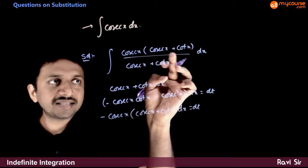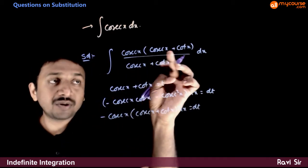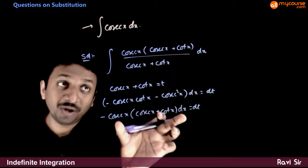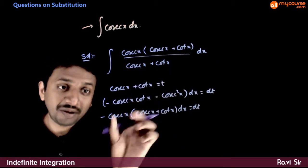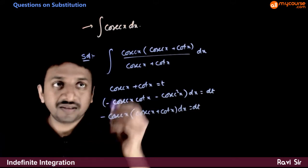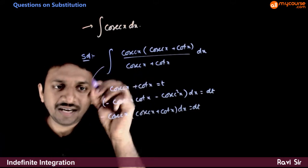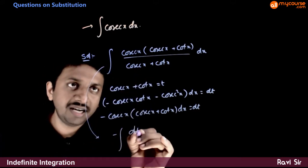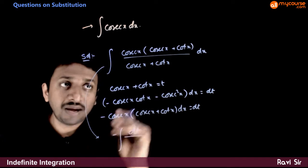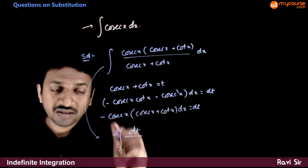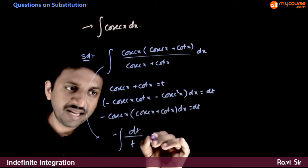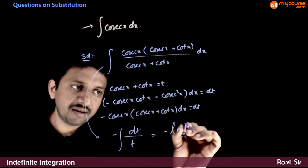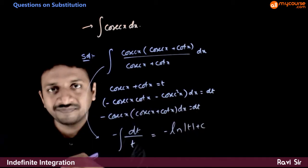So cosecant x times (cosecant x plus cot x) dx — the numerator becomes minus dt. So this integration becomes the integral of minus dt over t, which equals minus ln|t| plus c.